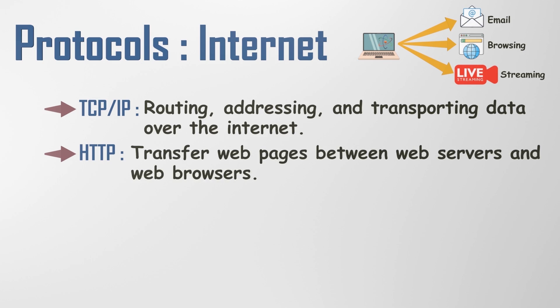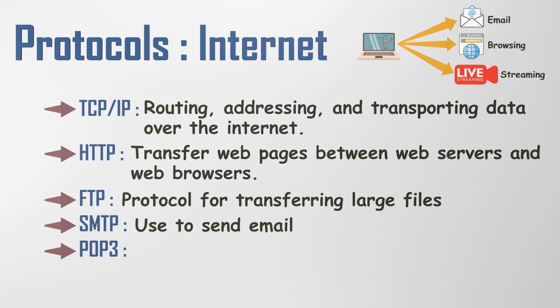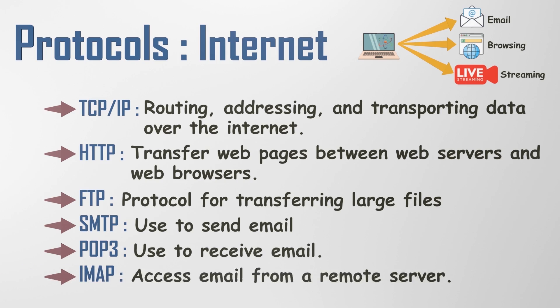HTTP is the protocol used to transfer web pages between web servers and web browsers. When you type a URL into a web browser, HTTP is used to fetch the web page from the web server and display it in your browser. FTP is used to transfer files between computers, commonly for large files such as software updates and video files. SMTP is used to send email messages to email servers. POP3 is used by email clients to download email messages from email servers. IMAP is used to access email from a remote server, allowing you to access your email from any device with an Internet connection. Protocols are standardized so that devices from different manufacturers can communicate with each other, making it possible to build large, interconnected networks.